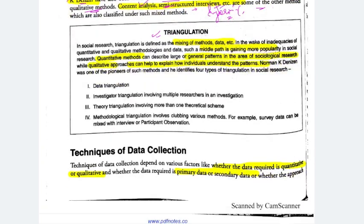Now let's look at triangulation. In triangulation, you use more than one method to make your study deeper and more comprehensive — it is a mixing of methods and data. This is a middle path and it is gaining more popularity because when you are studying society, you can't keep a limited scope. You have to employ different methods, and from that your study becomes better and yields more reliable results. Quantitative methods can describe large or general patterns in sociological research, while qualitative approaches can help explain how individuals understand those patterns.